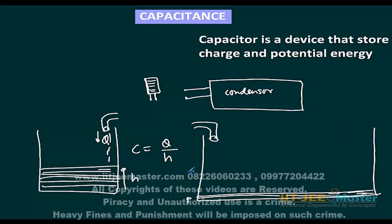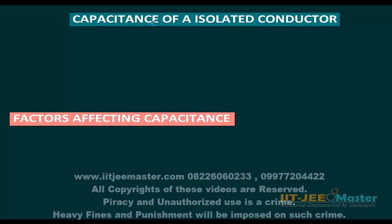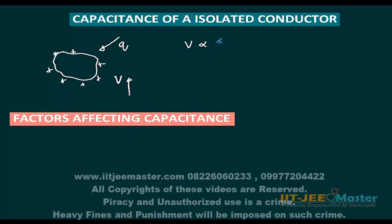We define capacity as how much can be filled — the total volume in ideal cases. Now, for an isolated conductor of any shape, if you provide a charge Q on it, its voltage will be V and will obviously increase. Voltage induced is proportional to the charge. So capacitance is defined as charge per volt: C = Q / V.